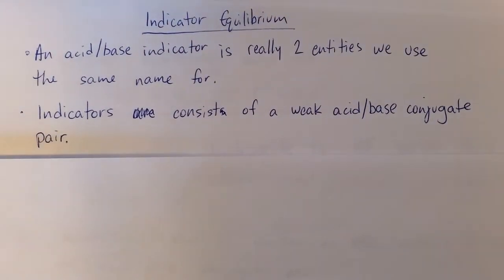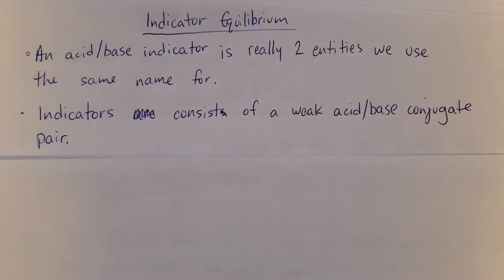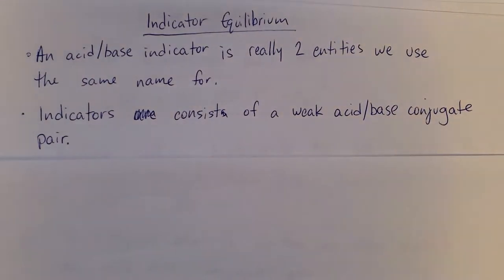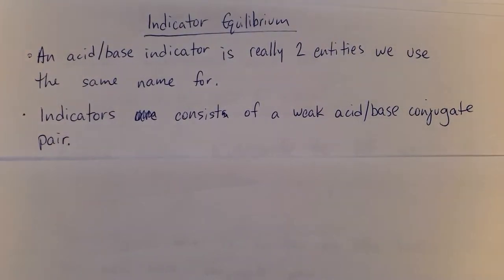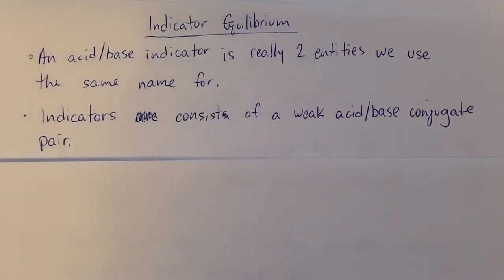Just a couple of short topics I want to address now. We'll talk about indicators today. An acid-base indicator is actually two entities that we use the same name for. It's a weak acid and base conjugate pair.